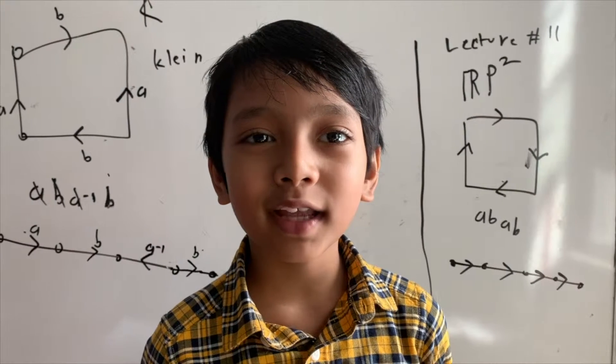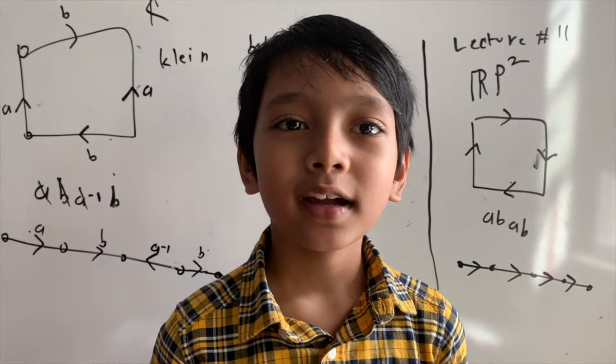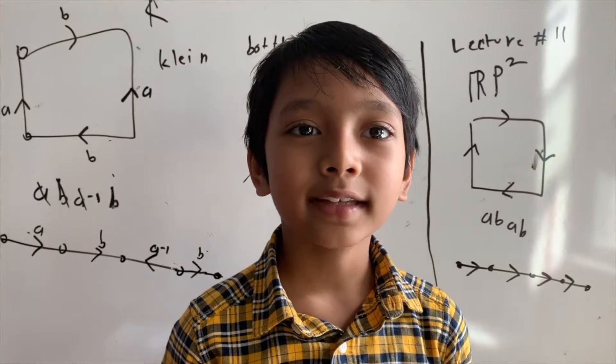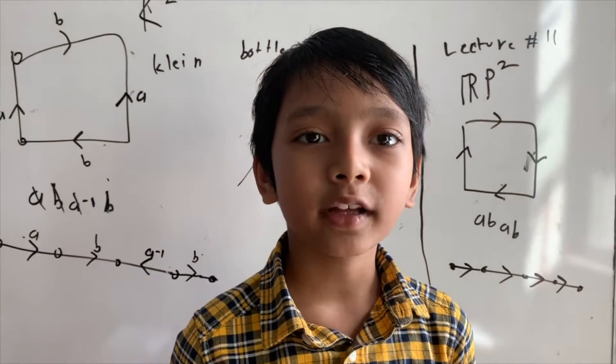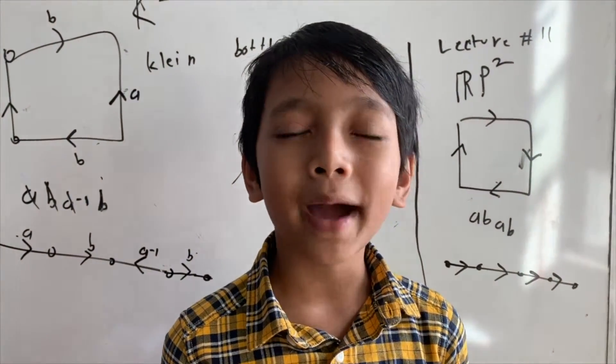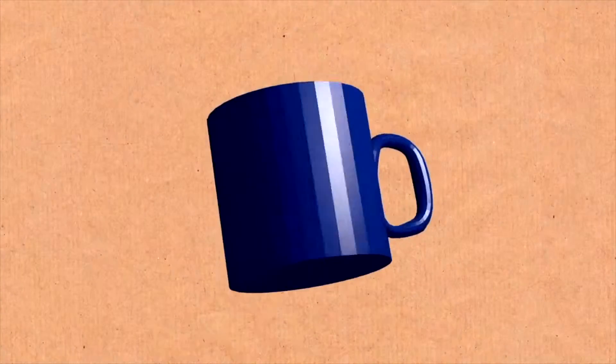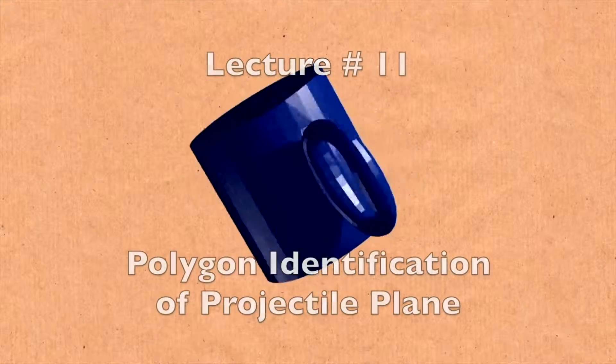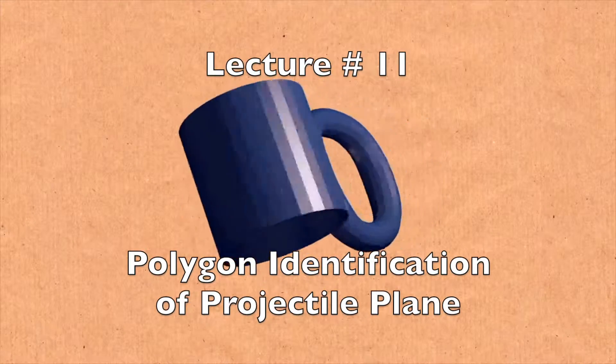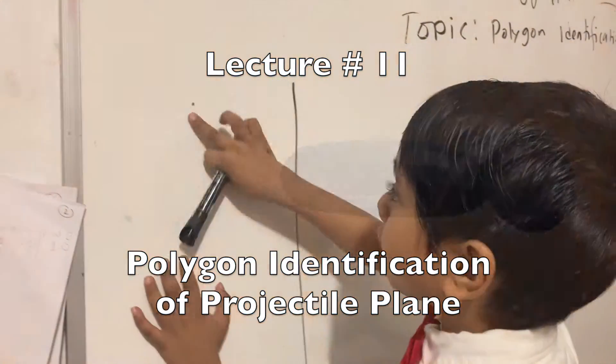My name is Abraham Isaac Berry, and I consider myself the god of mathematics. For me, a doughnut and a coffee mug are the same. I call this topology.